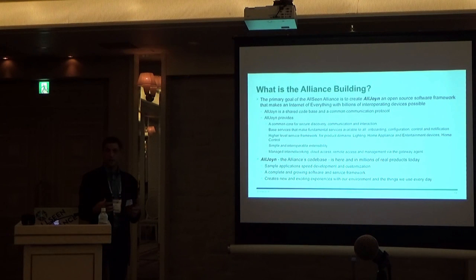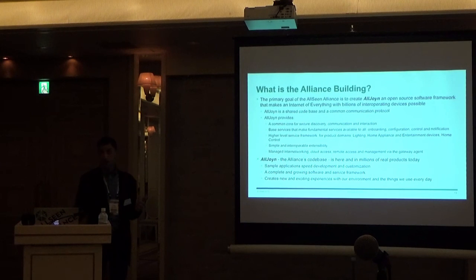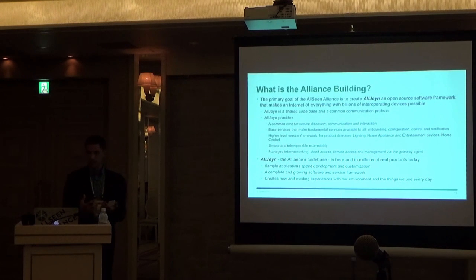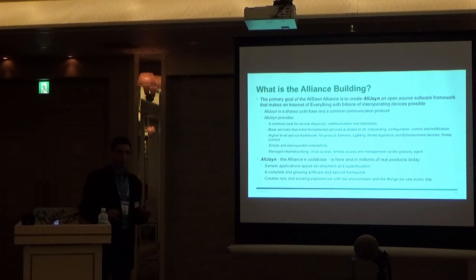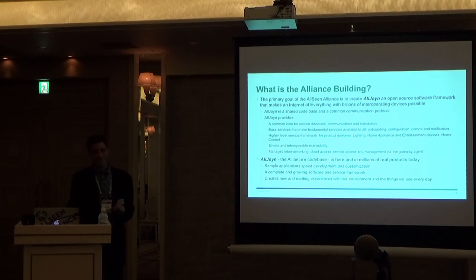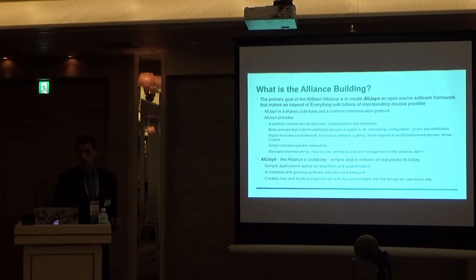The really cool part is that once you've done that integration, you just have to use the AllJoin application layer to build applications, because all of those other things now look like AllJoin things. AllJoin is a code base, and I keep coming back to this because I think it's really important — it's something the Alliance is really proud of. It's a real code base that works today. The stuff you download off the website is the same stuff that's in Windows 10, in LG TVs, in Panasonic speakers. If you download it, you're getting the same production code that they're using.